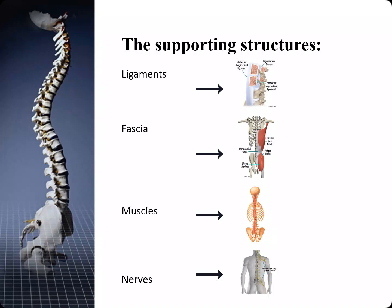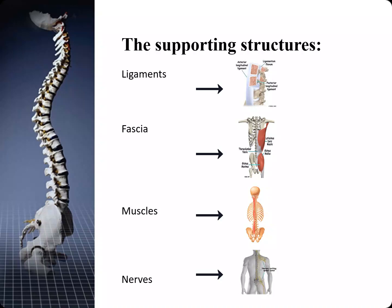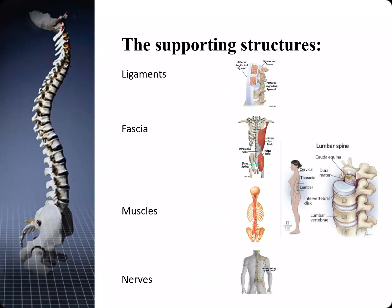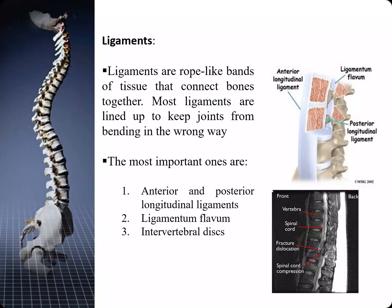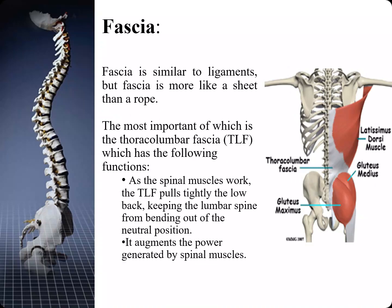The supporting structures of the spine are the ligaments, the fascia, the muscles, and the nerves. The ligaments are rope-like bands of tissue that connect bones together; most ligaments are aligned to keep joints from bending the wrong way. The most important ones are the anterior and posterior longitudinal ligaments, which we use a lot in evaluating trauma. If these ligaments are torn and there is displacement, we know we have a fracture even though we cannot see the fracture. The fascia is similar to ligaments but more like a sheet of thin rope. One of the most important fascial structures in the spinal column is the thoracolumbar fascia.